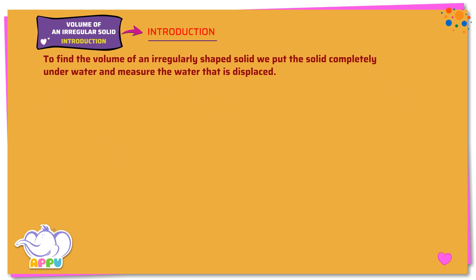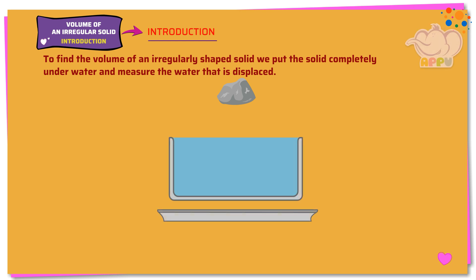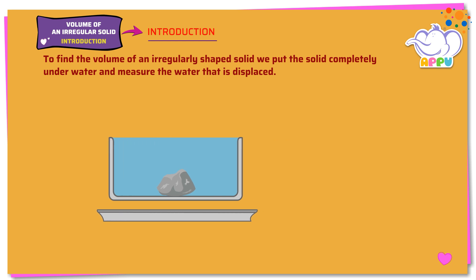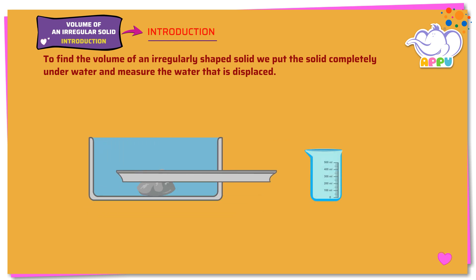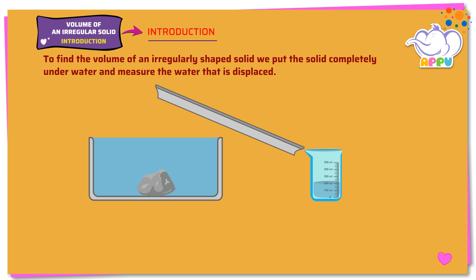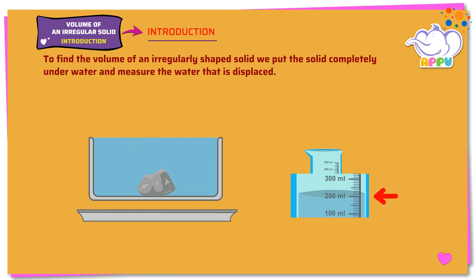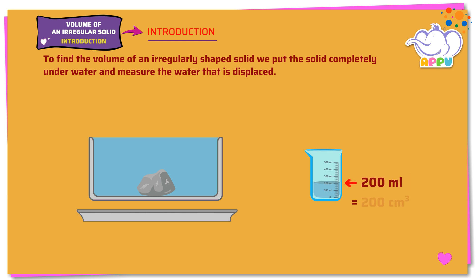Let's measure the volume of this stone. We take a container full of water and carefully drop the stone into the water. Water spills out because the stone occupies some place in the water. We collect this displaced water and measure it. Here it is 200 milliliters, which is the same as 200 cubic centimeters.